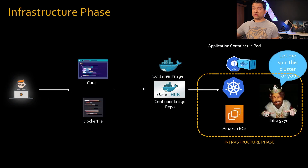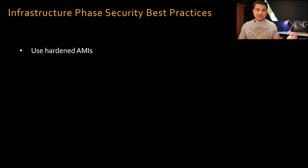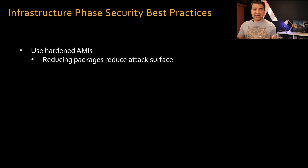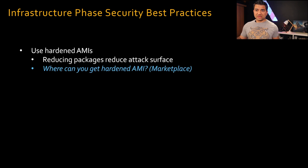Moving on to the infrastructure phase, where the infrastructure team creates the cluster. The first infrastructure phase security best practice is to use hardened AMIs. Don't confuse AMI with the container image — when you run your worker plane on a virtual machine such as Amazon EC2, you need an application machine image for that EC2, and your container image runs on that worker node. To use a hardened AMI, you remove unnecessary packages from the AMI, reducing the attack surface. You can expect an interview question about where to get these hardened AMIs.